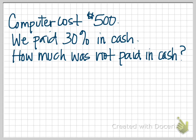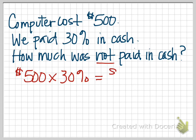For example, in this problem, a computer cost $500. We paid 30% in cash. How much was not paid in cash? So if you notice here, we are not being asked for the percentage — we are being asked how much was not paid in cash. So let's work the problem. $500 times 30% gives us $150. This amount represents what we paid in cash.